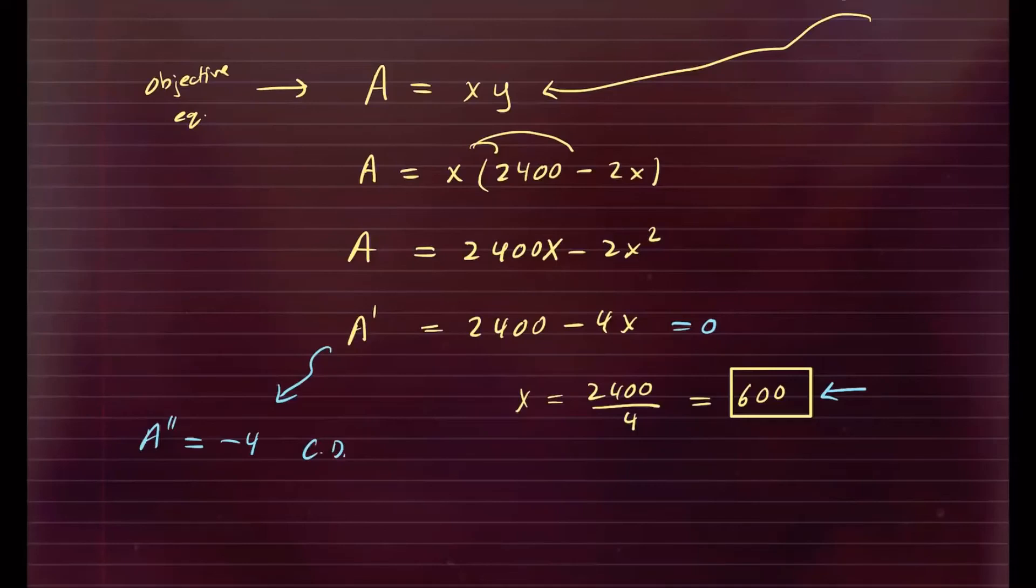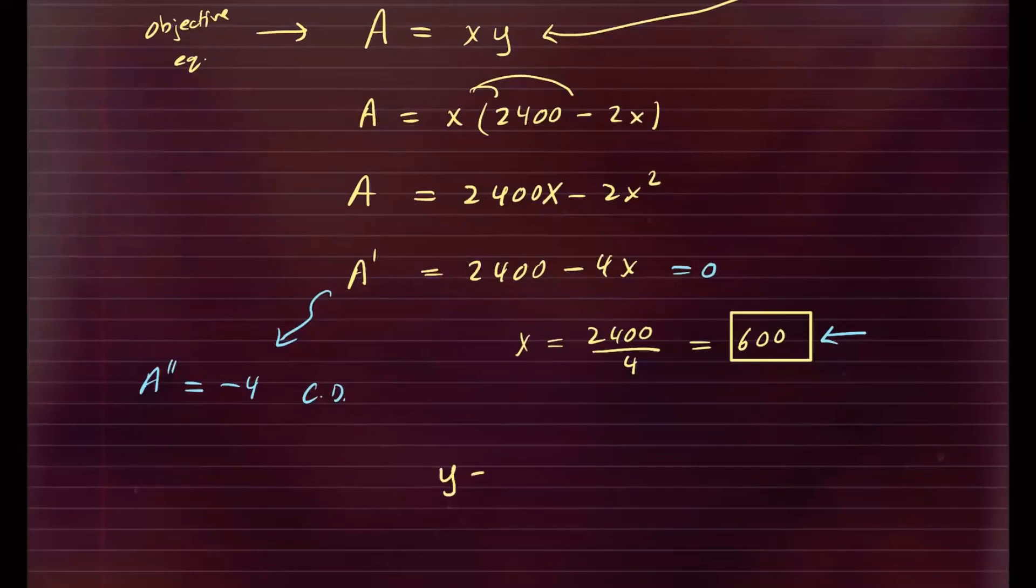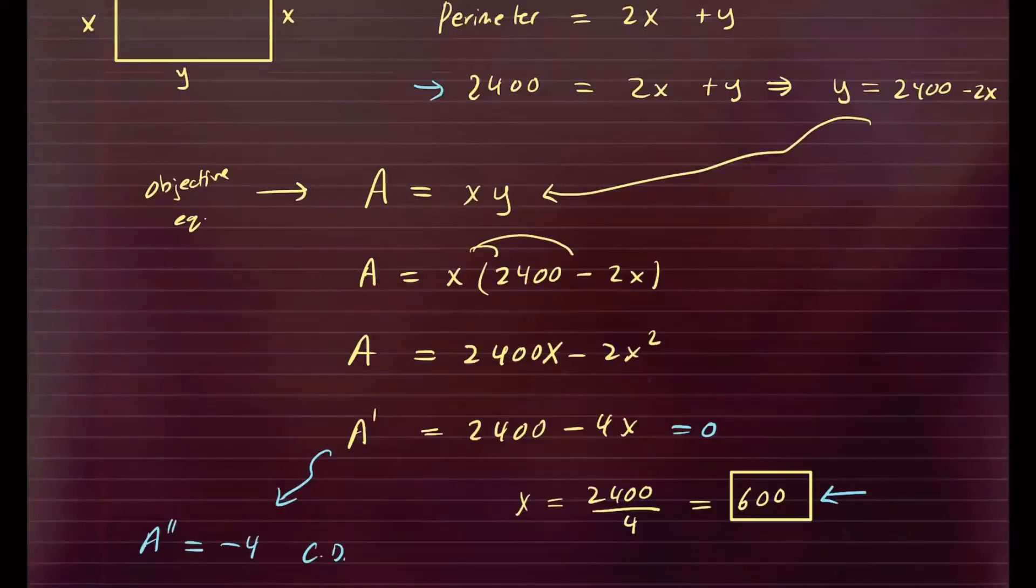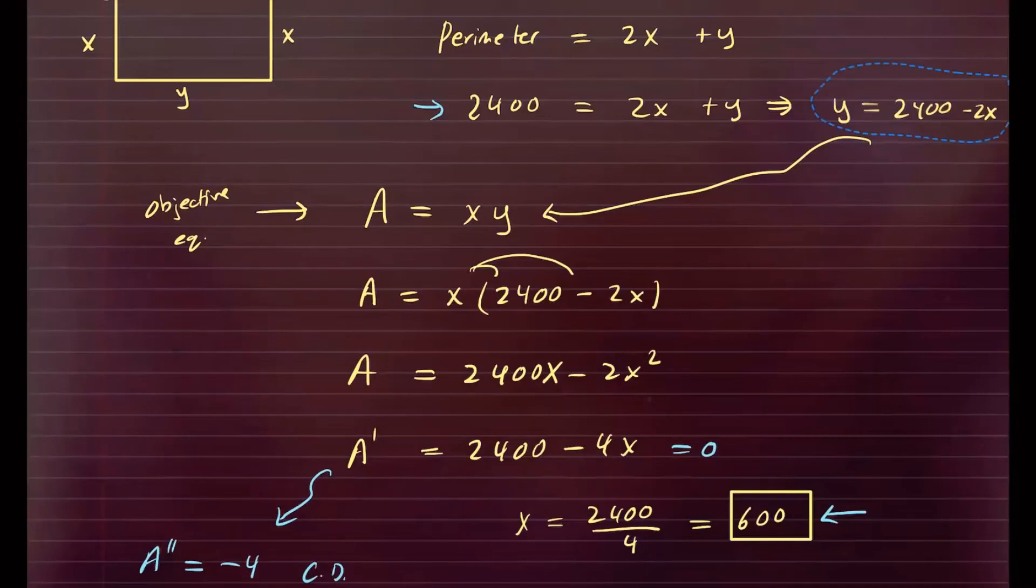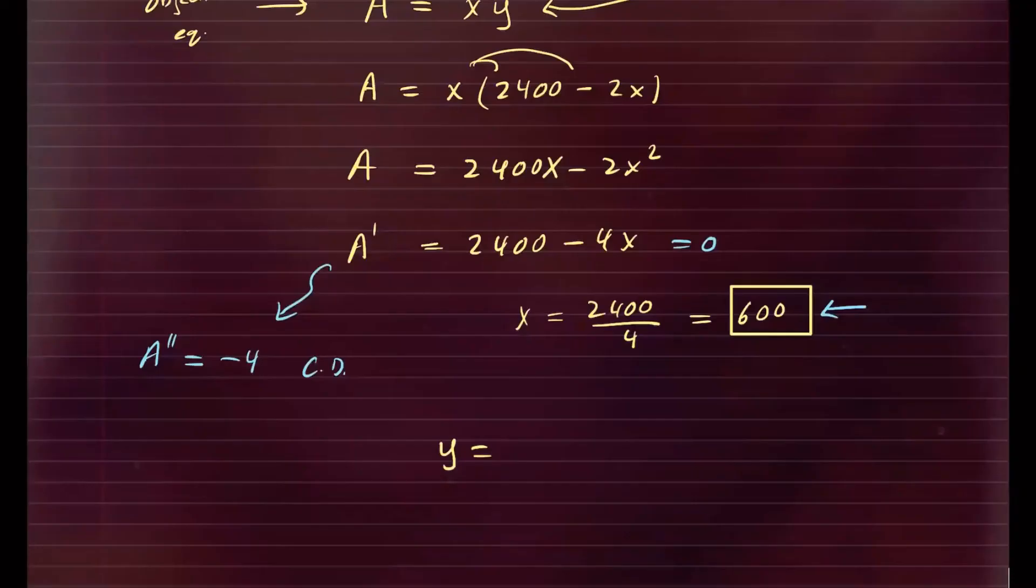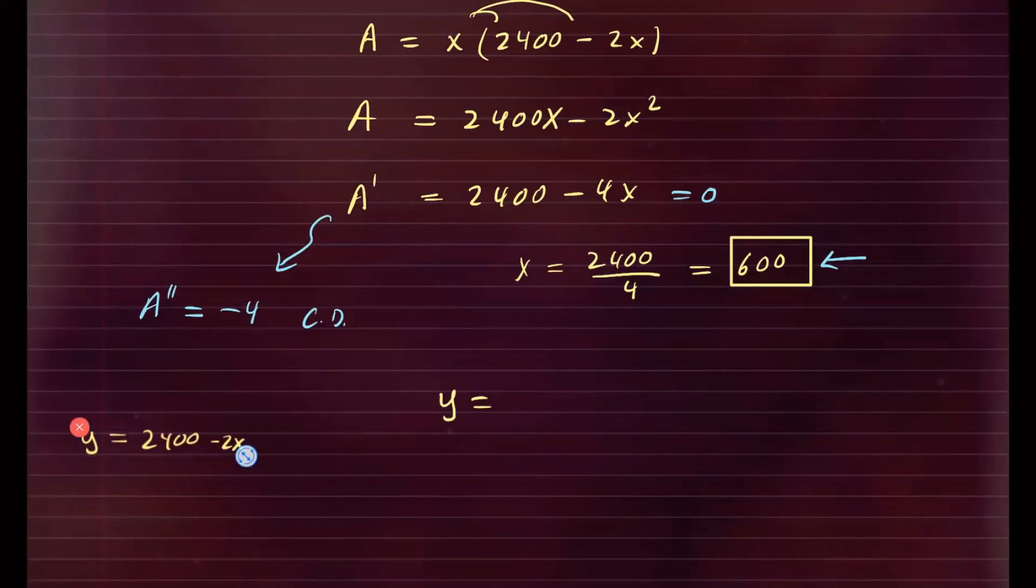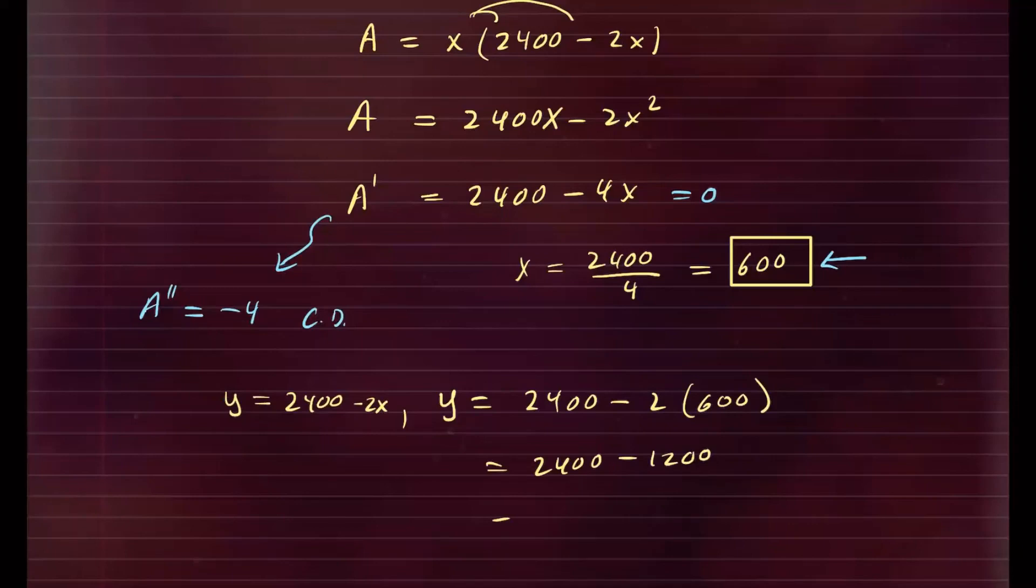So now let's go ahead and find the y value. y value is going to be solved by using this equation right here, which was our helping equation beginning of the problem. So we know y is equal to this much. So if I plug x for y, I have 2400 minus 2 times 600, which will give me 2400 minus 1200, and that would give you 1200 for y. So these are the dimensions in feet that will optimize the area function.